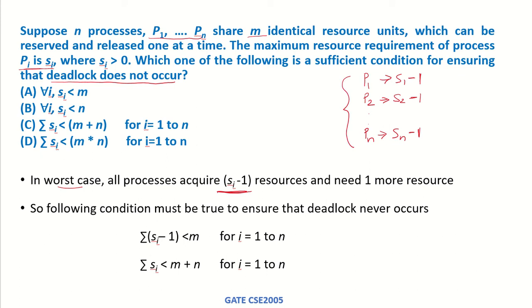So this can be the worst case. Now the sum of all the resources that have been allocated to these processes should be less than m, which is the total number of units.